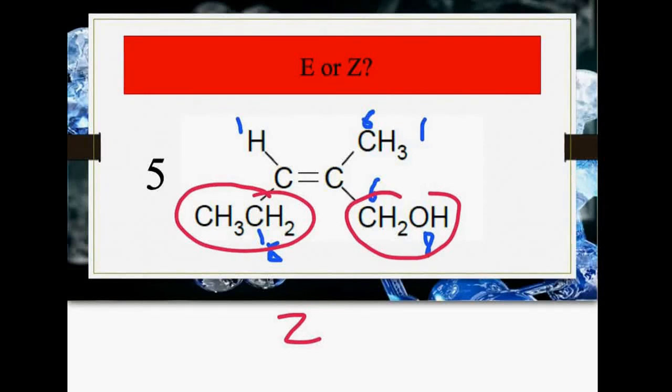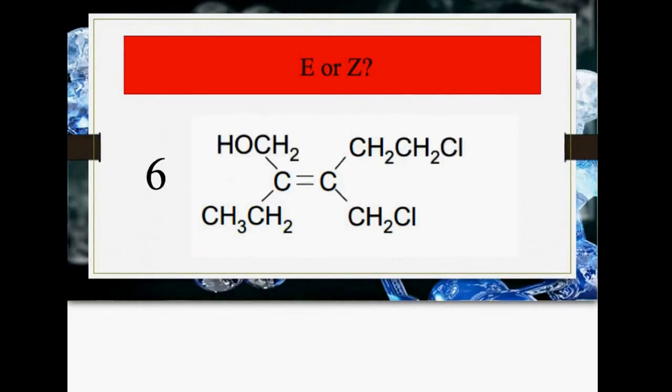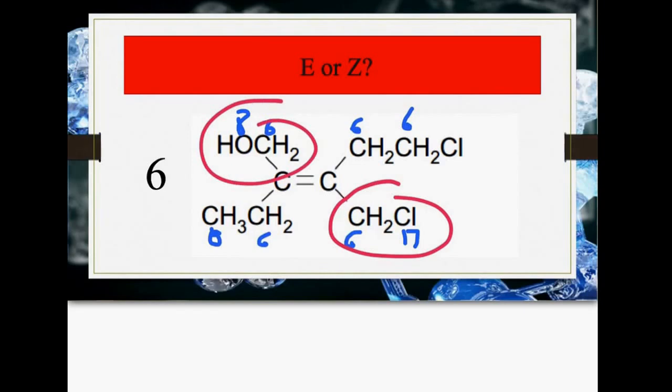You wouldn't need to name something this complex until A2, so don't worry about it. Pause the video and have a go at this one. Let's assign some numbers. It's all carbons, so this is 6, this is 6, this is 6, this is 6. The first one doesn't help us, so we look along the chain. This carbon is joined to two hydrogens and another carbon, so the highest is 6. Whereas this one is joined to a chlorine, which is 17, so this one takes priority. Let's look at the other side. This one the highest is 6, this one the highest is 8 for oxygen. So this one takes priority, so this must be E.